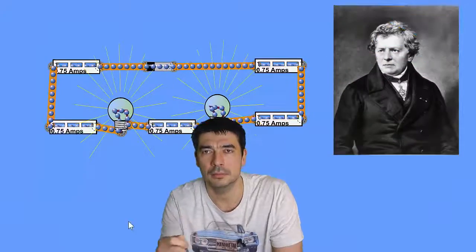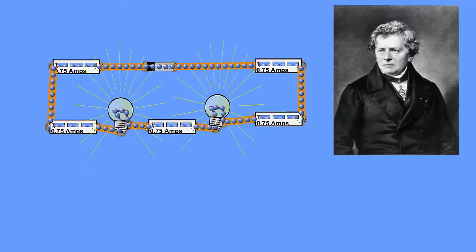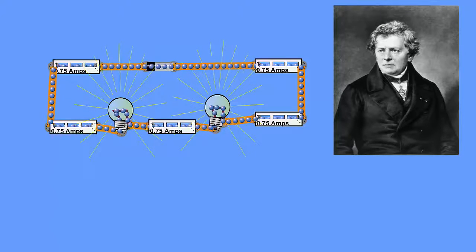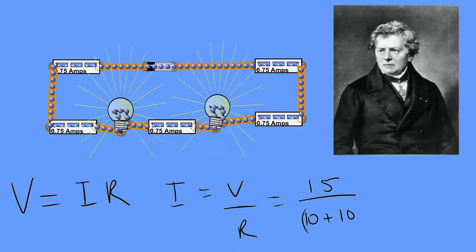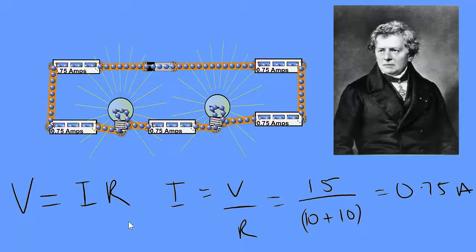Adding another bulb in the circuit allows us to explore some other options. Adding another bulb doubles the resistance because resistors in series add up. We can use Ohm's law to calculate the current which is V equals IR. Rearranged for I gives us V over R and since there are two resistors each at 10 ohms that adds up to 20 ohms and the current comes out at 0.75 amps. So that's Ohm's law.